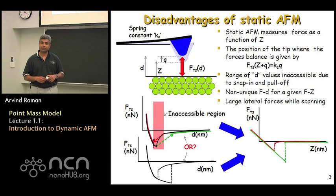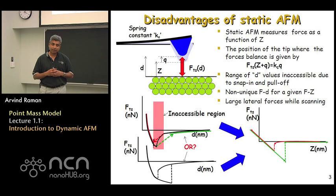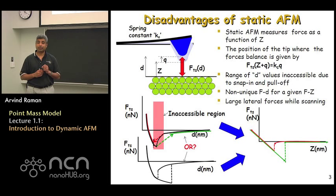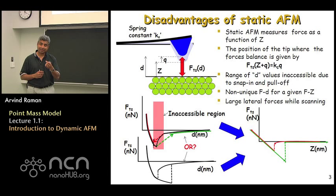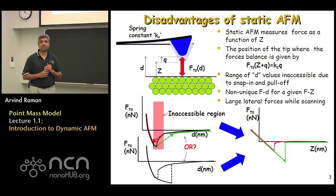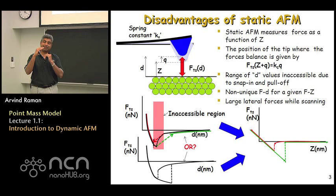In static atomic force microscopy methods from Part One, a key goal was to measure force as a function of tip-sample gap D. However, it is not possible in AFM to directly measure force as a function of D; rather, what you measure is force as a function of Z. Z represents the distance or displacement between the undeflected tip and the sample.